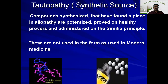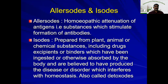Other sources of homeopathic drugs are allersodes and isodes. Allersodes means homeopathic attenuation of antigens — substances that can induce allergic reactions or antigen-antibody reactions, stimulating the formation of antibodies. Examples include pollen grains, animal dander, or any substance which can cause allergy. If a particular substance induces allergic complaints or diseases, such allergens or antigens can be diluted, potentized, or dynamized, and given to alleviate or nullify the effect of allergy. That is the concept of introducing allersodes in homeopathy.